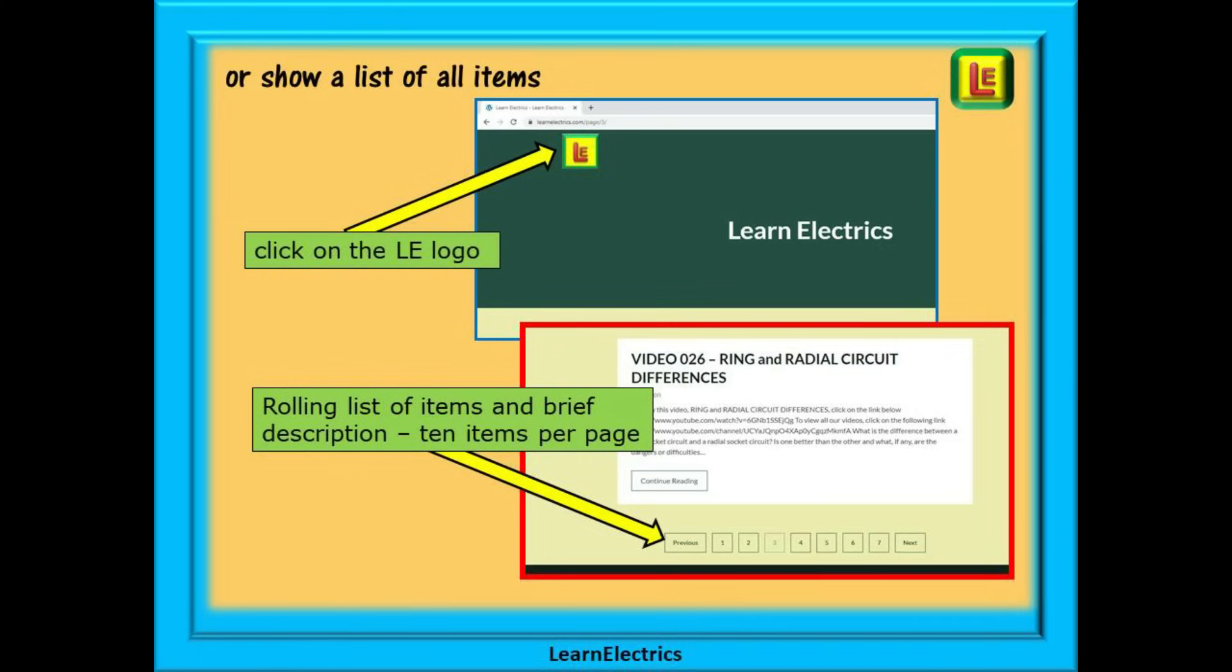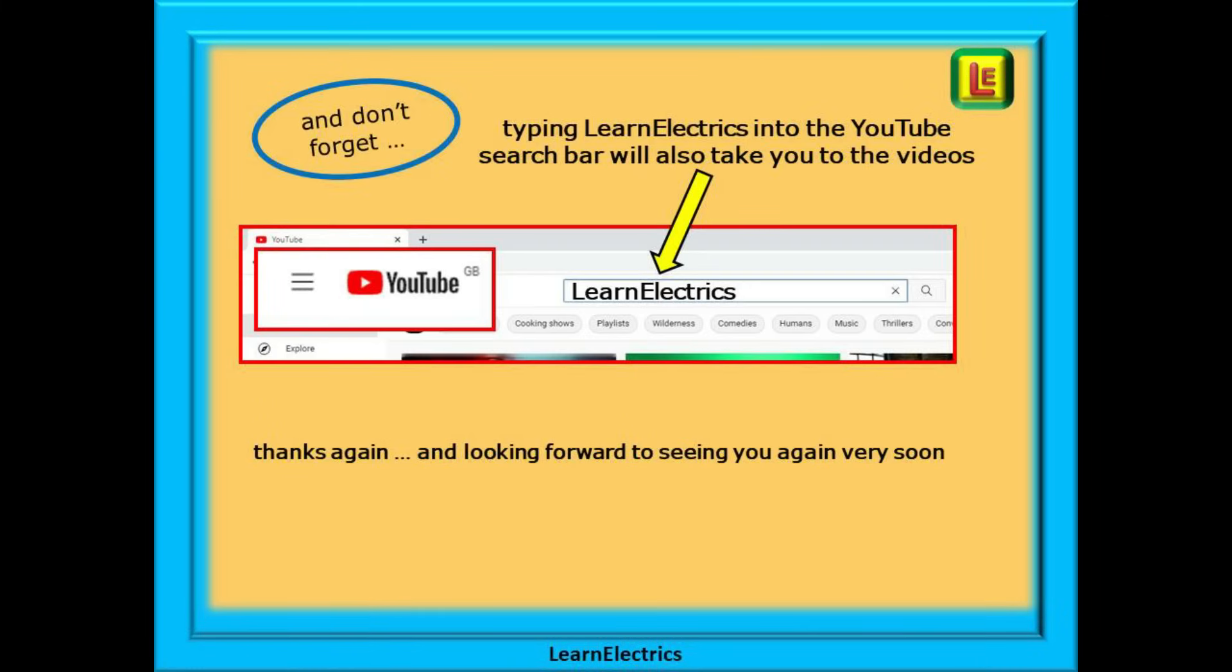Or you can browse through a list of all the available items and videos. To do this click on the LE logo on the top left of the home page and all our items and videos will be shown. There will be 10 items shown on each page and at the bottom of each page is a page selector. Page two, three, four and so on that will bring up the next 10 items or videos in the list. And don't forget that you can also type in learn electrics all one word into the YouTube search bar to go directly to our channel at any time from any computer. We are constantly adding new videos to our channel, don't miss the next one. Once again thanks for watching and we hope to see you again very soon!